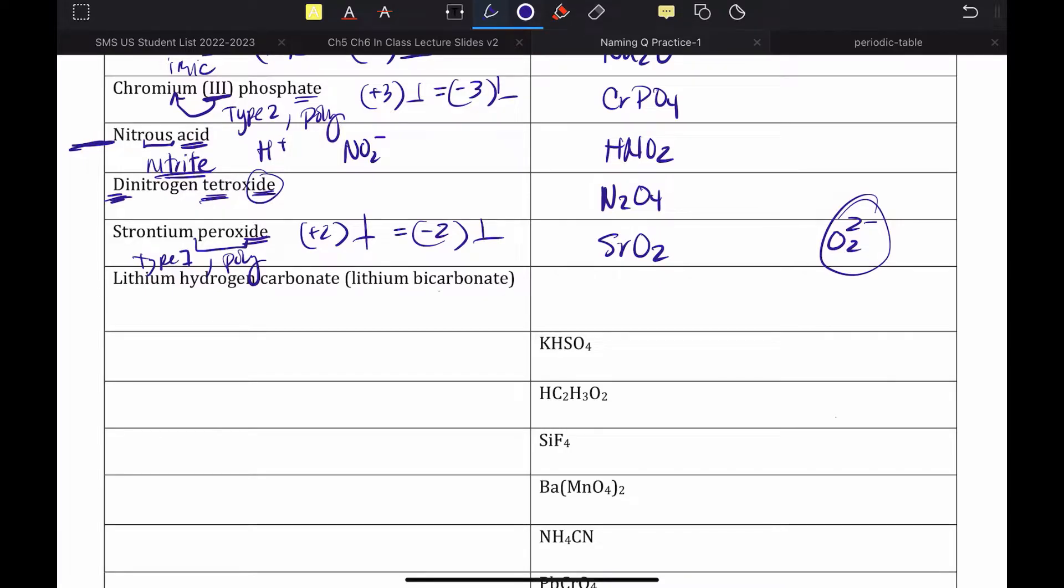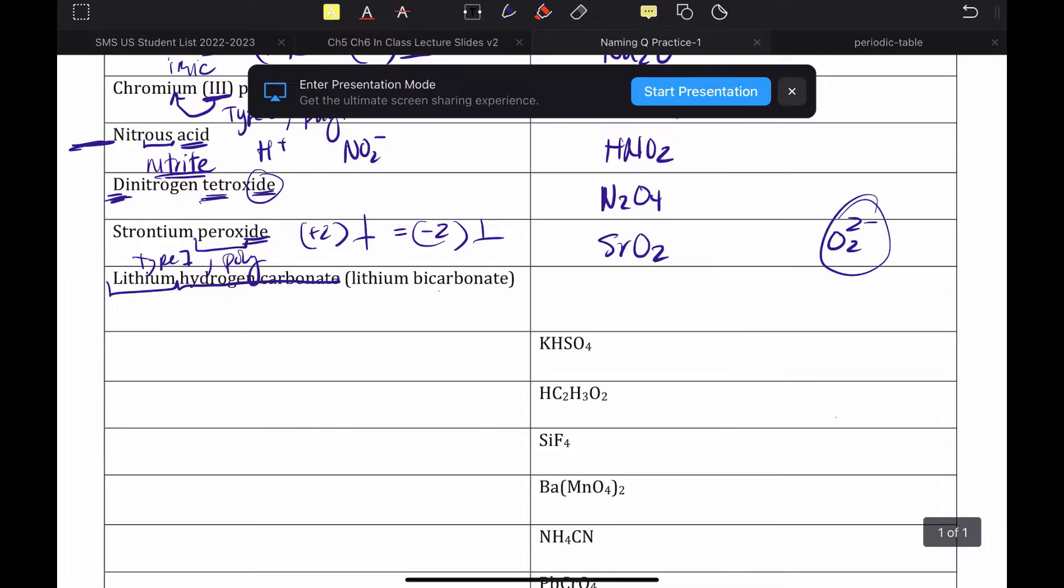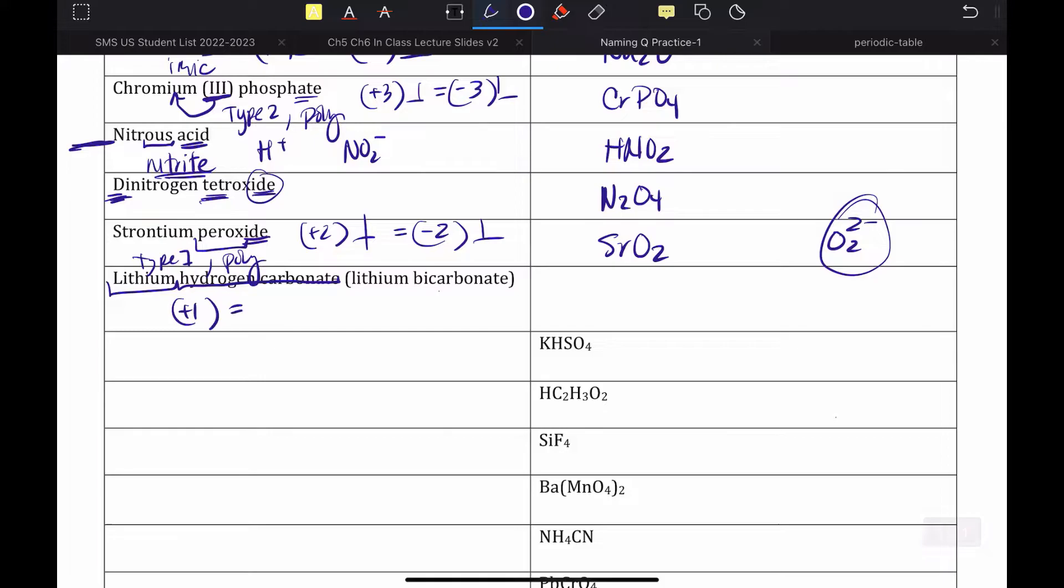Lithium bicarbonate. We would just see this and be like, that's a polyatomic ion. Probably ionic. We'd go look at a periodic table to just double check. Lithium, indeed, it is a metal, and it's in group 1. So, we know we have a plus 1 charge. Plus 1 is equal to minus 1. I need one of each. So, LiHCO3.